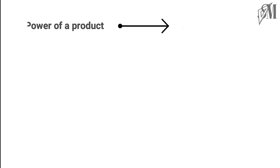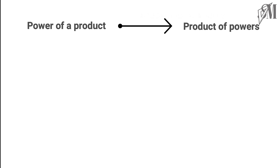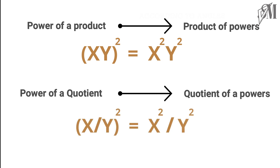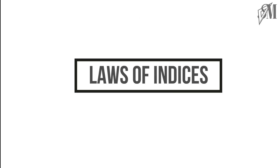In previous grades you have already learned about how to write a power of a product as a product of powers, and a power of a quotient as a quotient of powers. In this grade we are going to learn the laws of indices. There are five laws of indices.